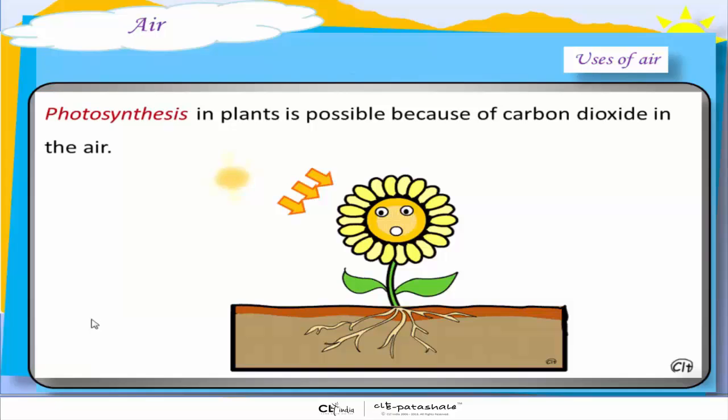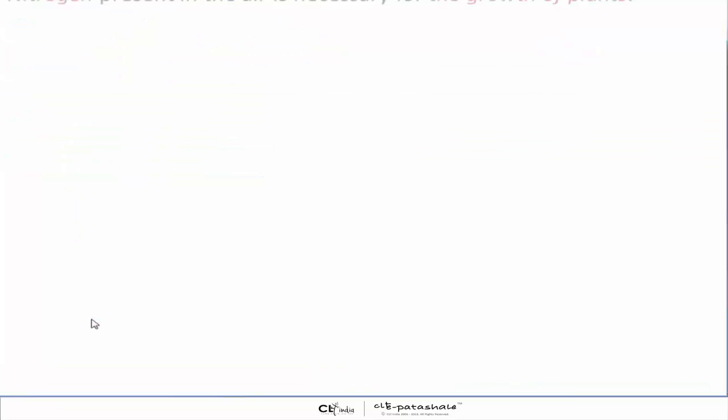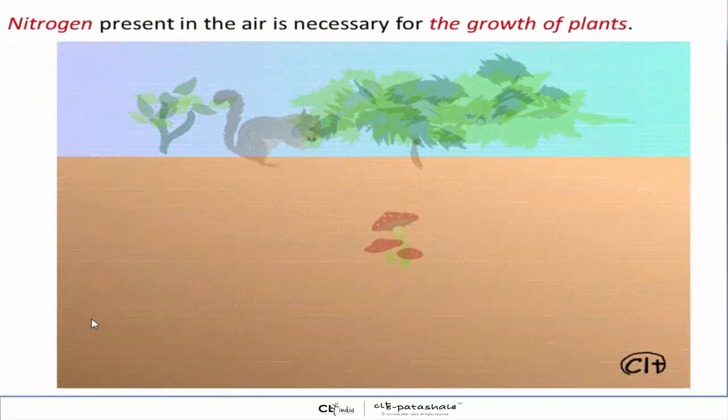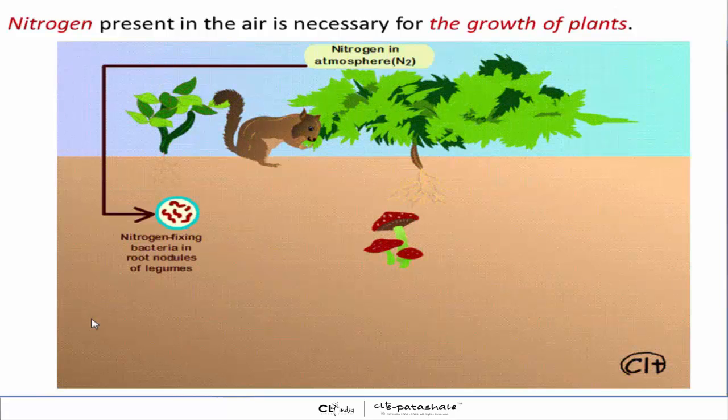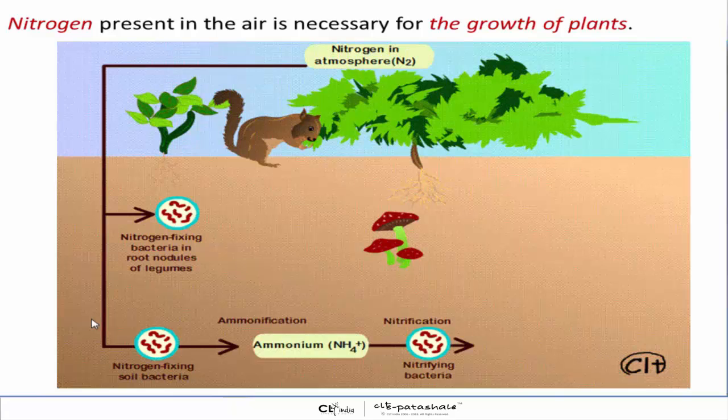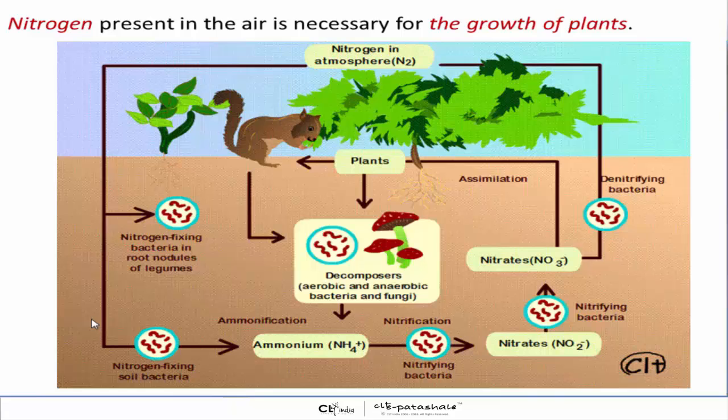Photosynthesis in plants is possible because of carbon dioxide in the air. Birds fly because there's air. Nitrogen, that is 78% of the air, is necessary for the growth of plants. It's a complex cycle where plants absorb nitrogen from the soil which comes from the earth and then use it as a fertilizer naturally.